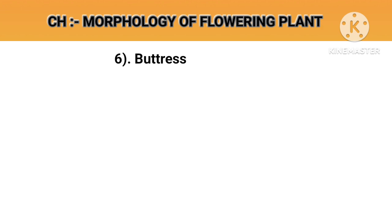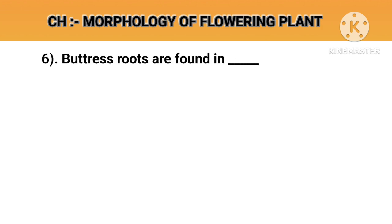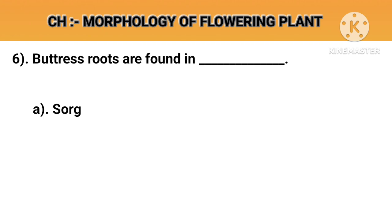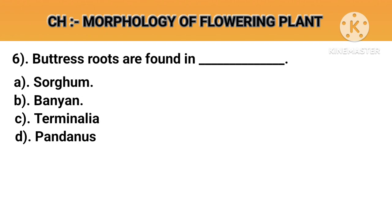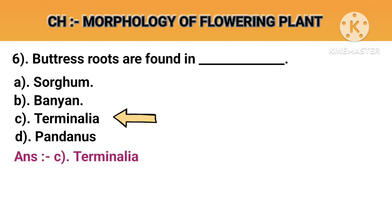Question number 6. Buttress roots are found in. Option A: Sorghum. Option B: Bunyan. Option C: Terminalea. Option D: Pandanus. Answer C: Terminalea.